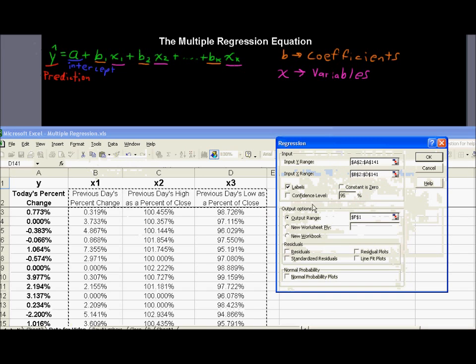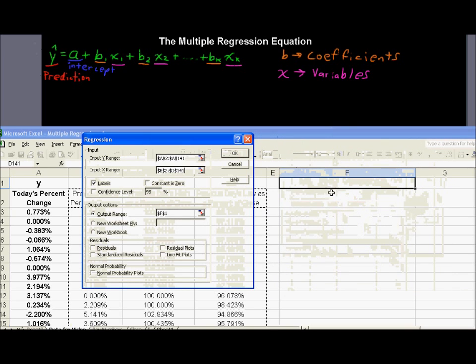I'm not going to mess with the confidence interval. This is like a flight checklist. Look at all these things, although it'll give us one by default. Output range. I'm going to put the output range right in this. I'm going to start it up in the upper left-hand corner. It's going to be right at F1, this cell. Okay, I'm ready to go. I don't need any of this other stuff for this example.